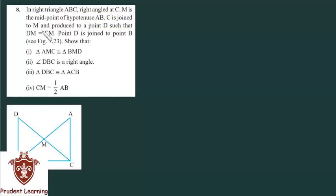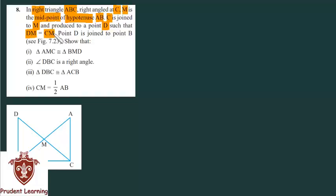Let us move on to the last question of NCERT Exercise 7.1. The question is: in right triangle ABC, right angle at C, M is the midpoint of hypotenuse AB. C is joined to M and produced to a point D such that DM is equal to CM. Point D is joined to point B. In the figure given, we have to show four sections.